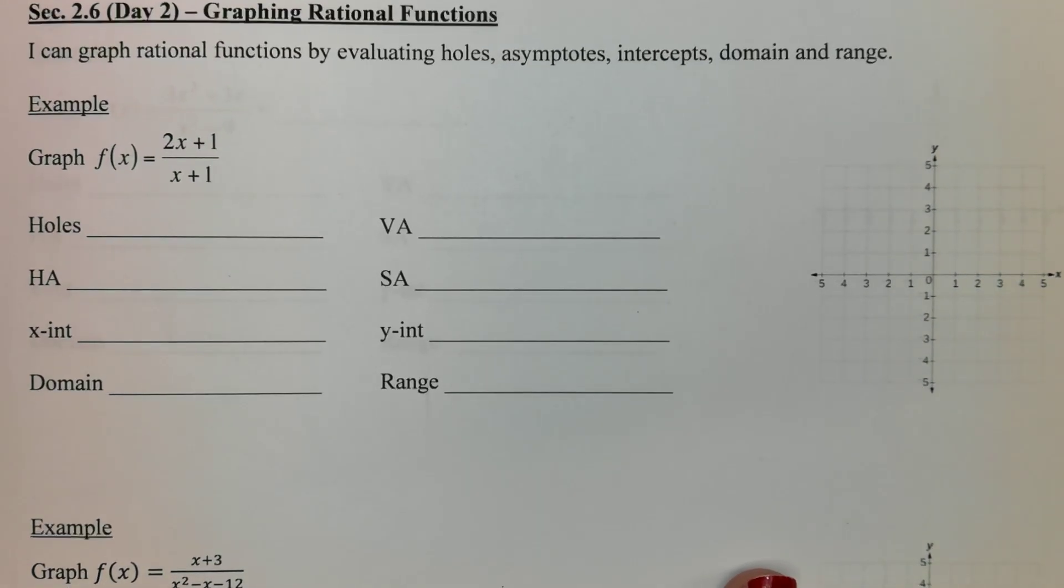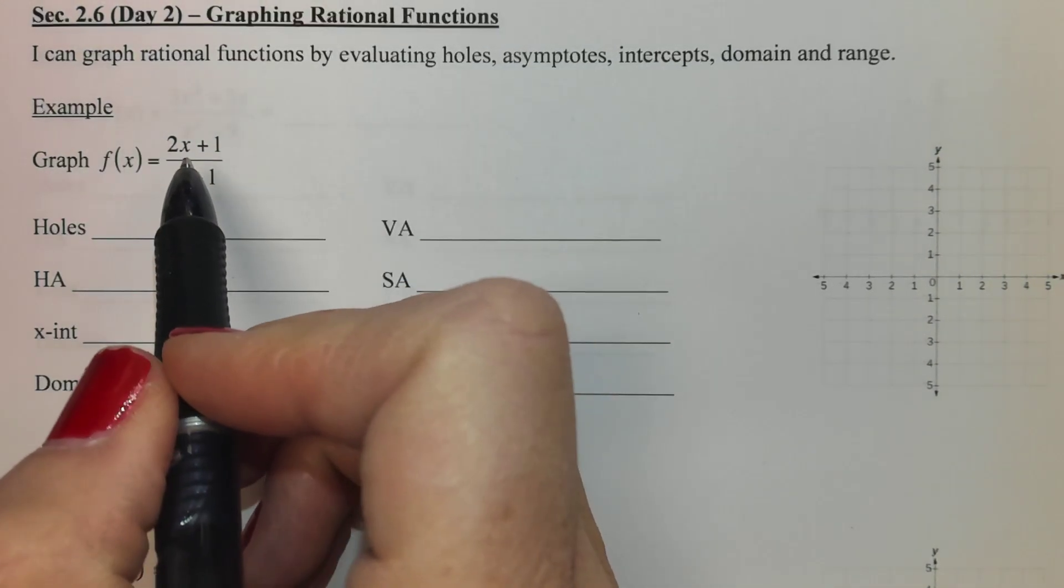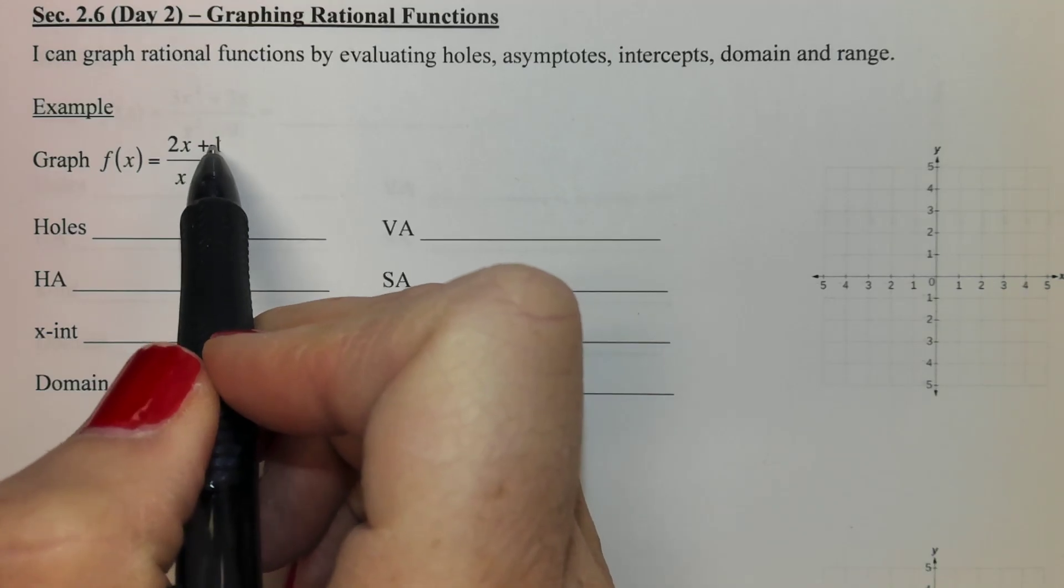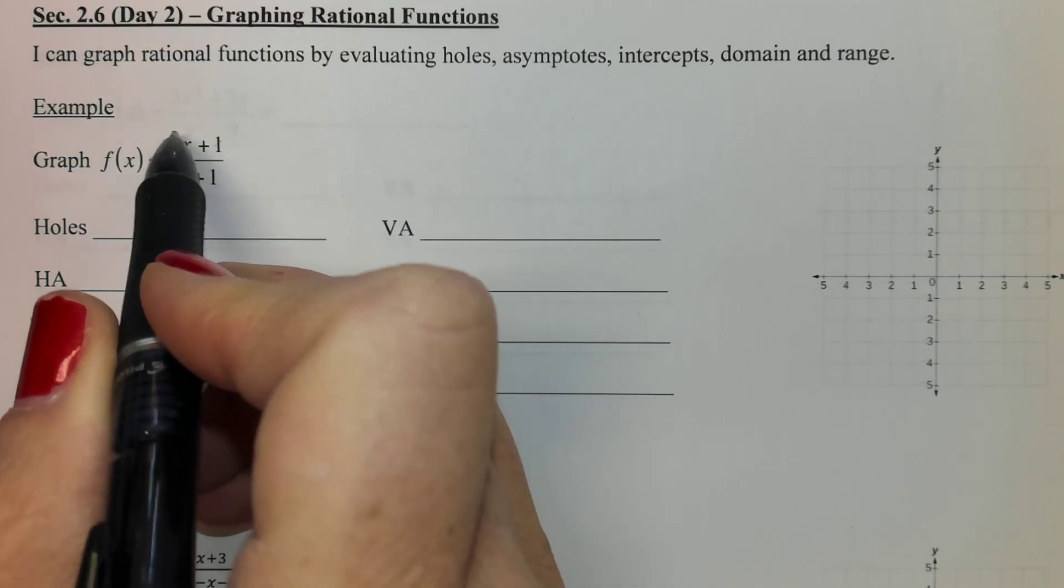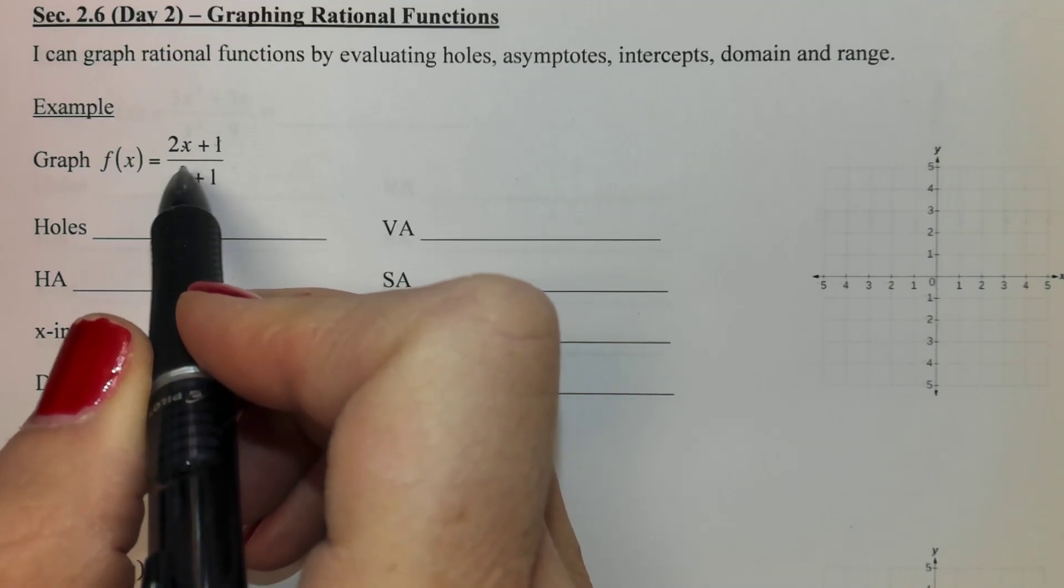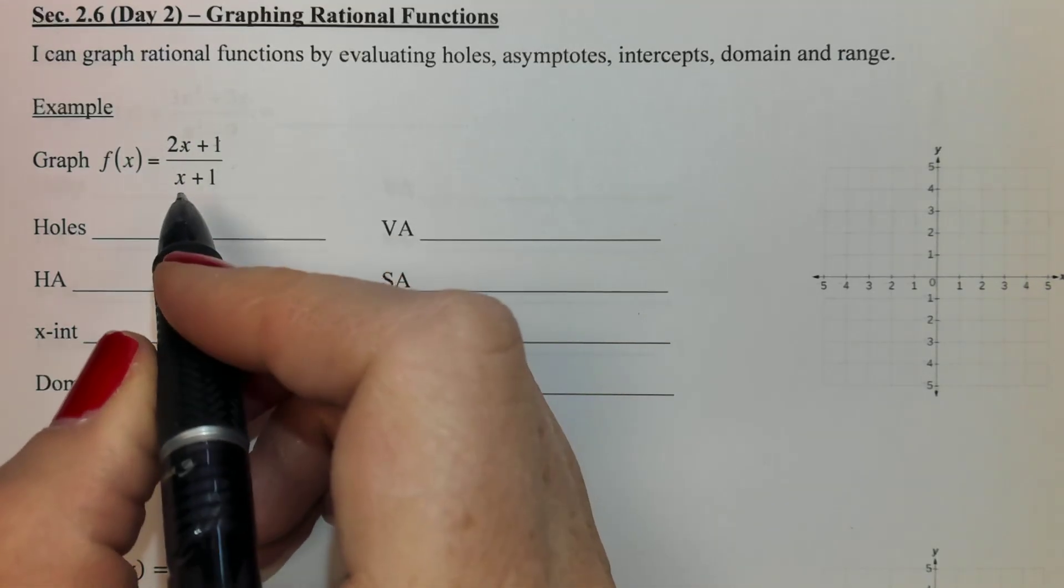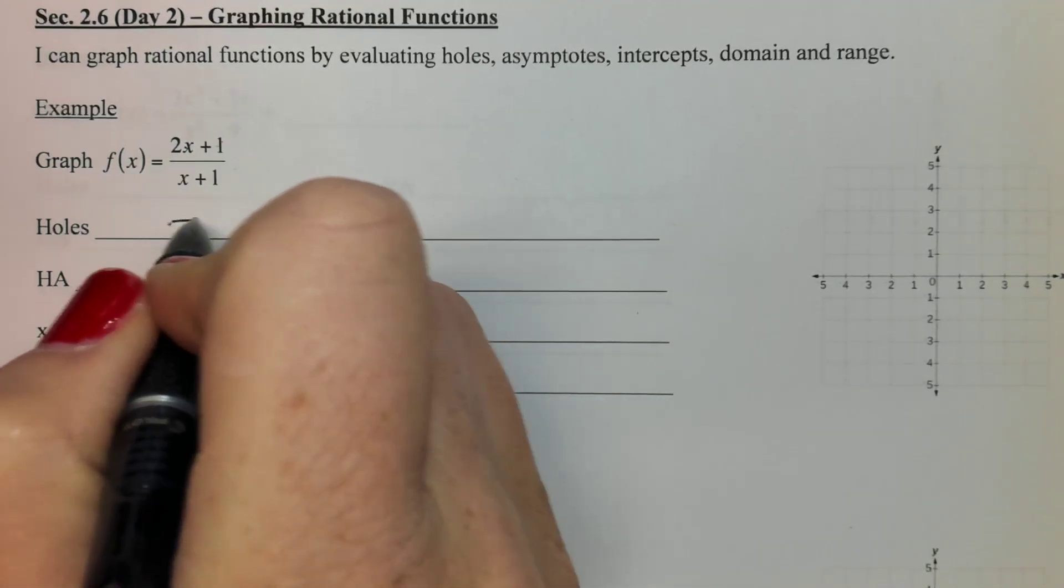But the first step is always to factor and cancel if we can. Remember that a single one cannot cancel. You can't even cancel this x plus one because it's not protected in a parenthesis. So there's nothing here that can cancel and since nothing cancels that means there aren't any holes.